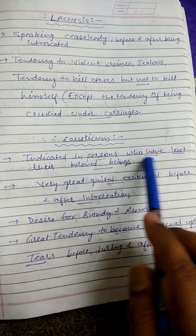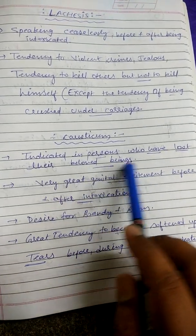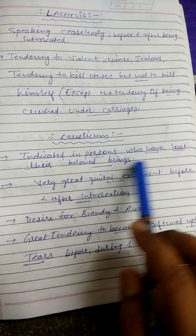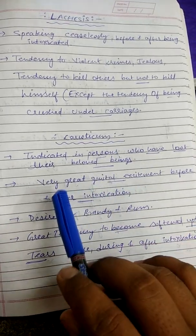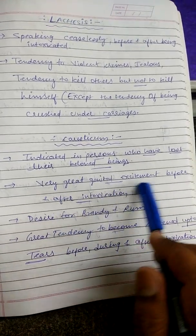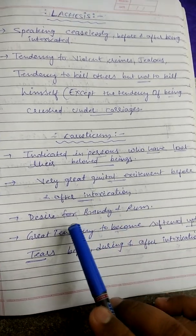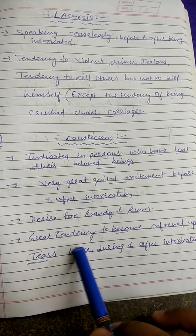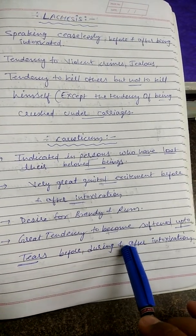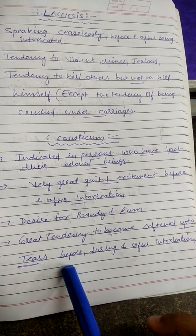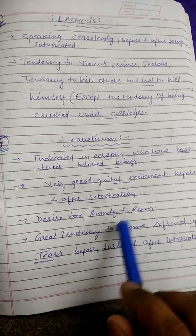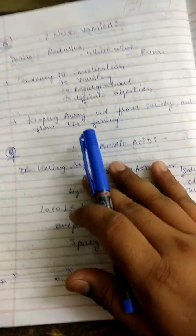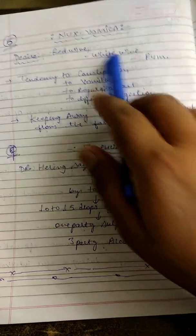Causticum is indicated in persons who have lost their beloved beings. Yaha pe disappointment of love mein bhi Causticum kaafi extra effect karti hai. Very great genital excitement before and after intoxication, desire for brandy and rum, great tendency to become softened up to tears before, during, and after intoxication — tendency to cry or weeping before, during, and after alcoholism.